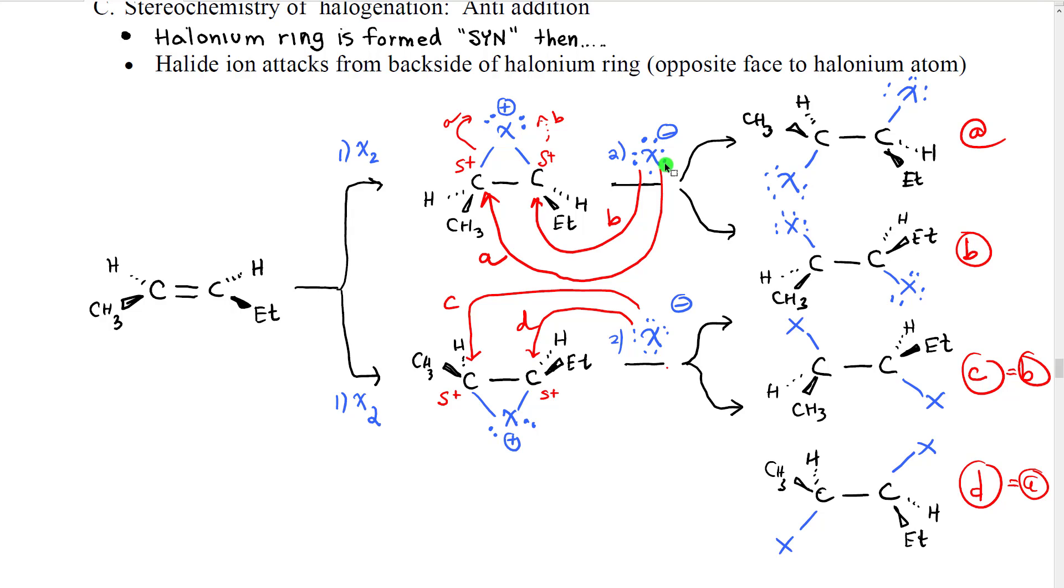So let's look. If the halide ion approaches this carbon, you would break this bond, and these two groups would be pushed upward, and the halogen would be attached here. It would look like this. In contrast, if the halide ion approached this carbon, the bond would be broken in that direction, the left-hand halogen would be on the top, and the right-hand halogen would be on the bottom. That would look like this.